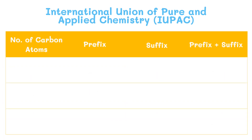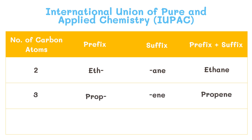Now let's combine the two concepts for naming so far. For example, you have determined the number of carbon atoms, which is two, and it is an alkane. Thus, the hydrocarbon will be called ethane. An alkene with three carbon atoms will be called propene. Lastly, an alkyne with four carbon atoms will be called butyne.